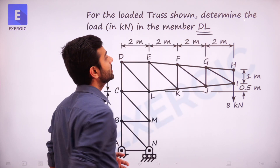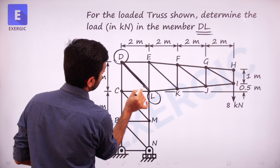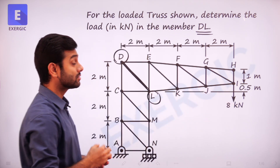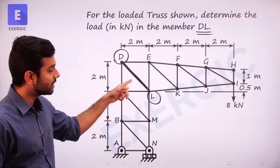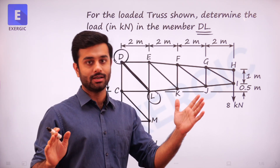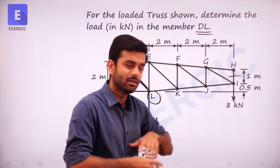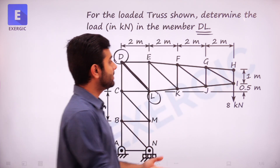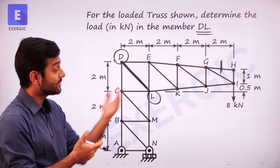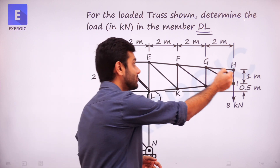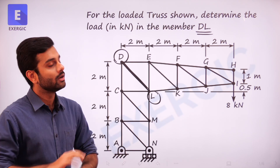Where is DL? This is D, this is L, and this is the member DL. You can see it is quite far from the loading point. If you start with method of joint, you will have to apply it at too many joints to reach here — it will definitely take more than 3 minutes. Not recommended at all to use in the exam. If it were asking for HI or GH, maybe we could have done it, but DL is too far.